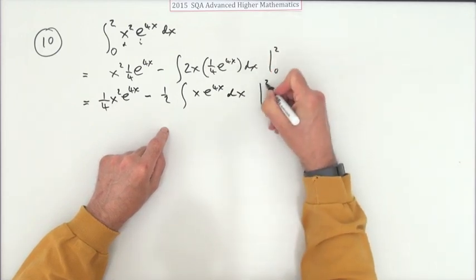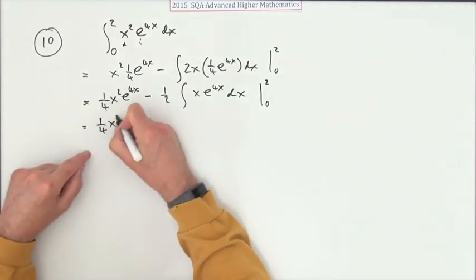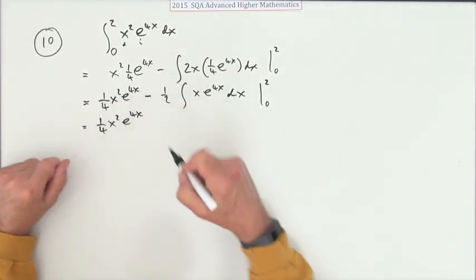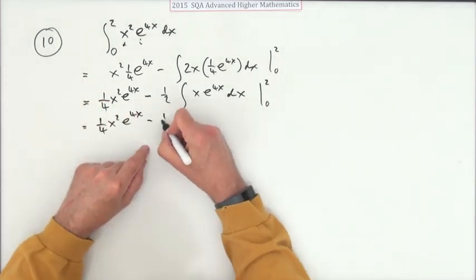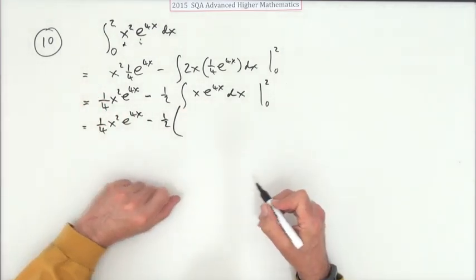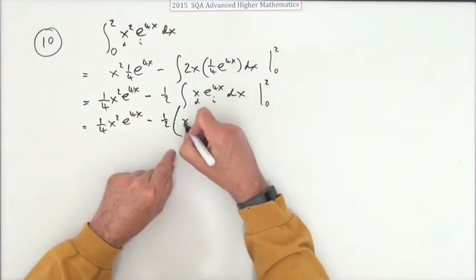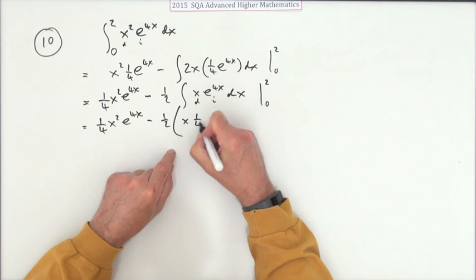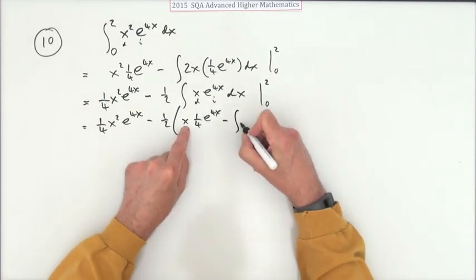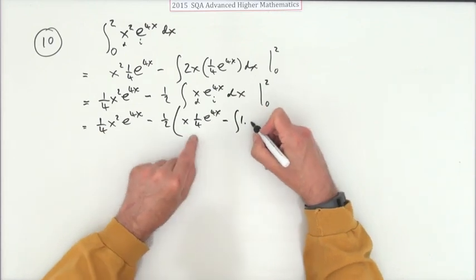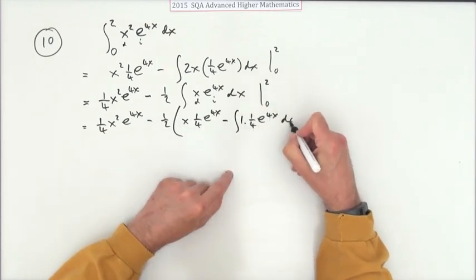All to be evaluated from 0 to 2. So this can just wait. Now I need to apply integration by parts again to the integral of x e^(4x). Differentiating x gives 1; integrating e^(4x) gives a quarter e^(4x). Carry this forward: that's a quarter e^(4x) dx.